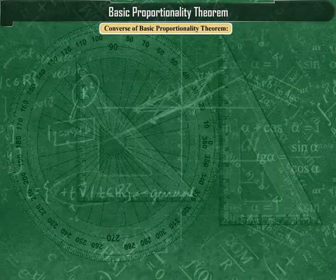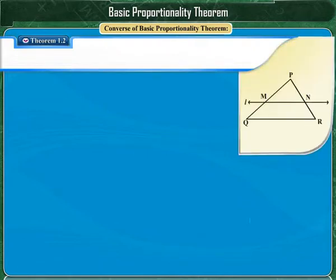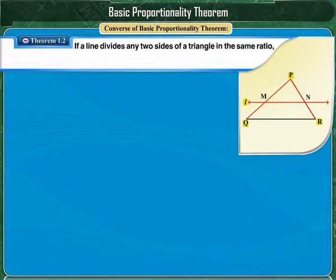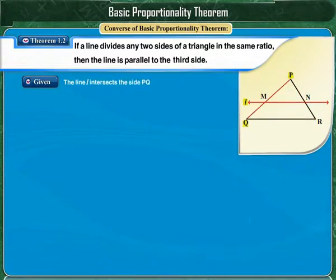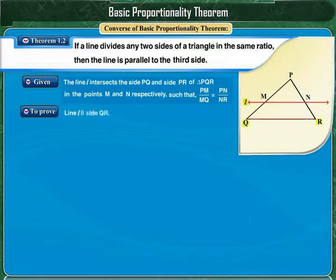Converse of basic proportionality theorem. If a line divides any two sides of a triangle in the same ratio, then the line is parallel to the third side. It is given that line L intersects side PQ and side PR of triangle PQR in points M and N respectively, such that PM upon MQ is equal to PN upon NR. We have to prove that line L is parallel to side QR.